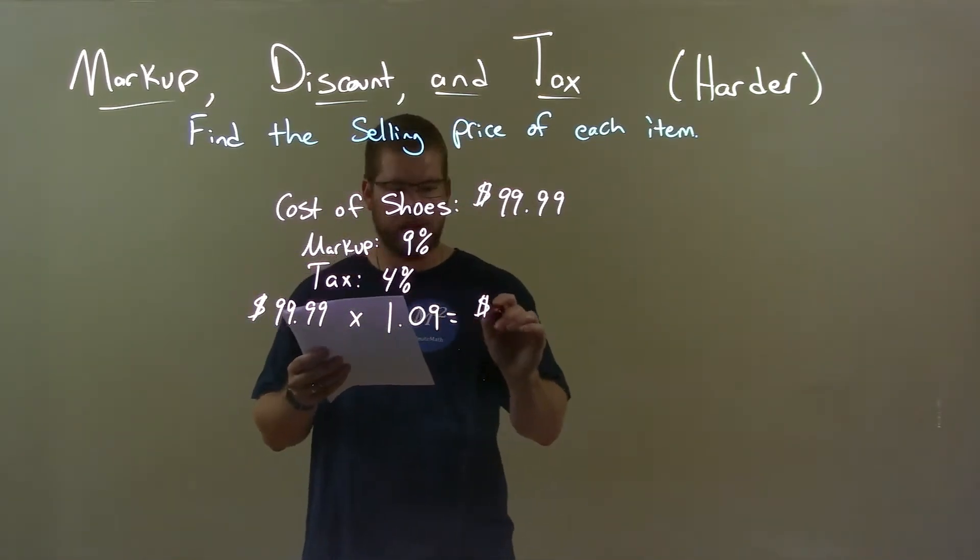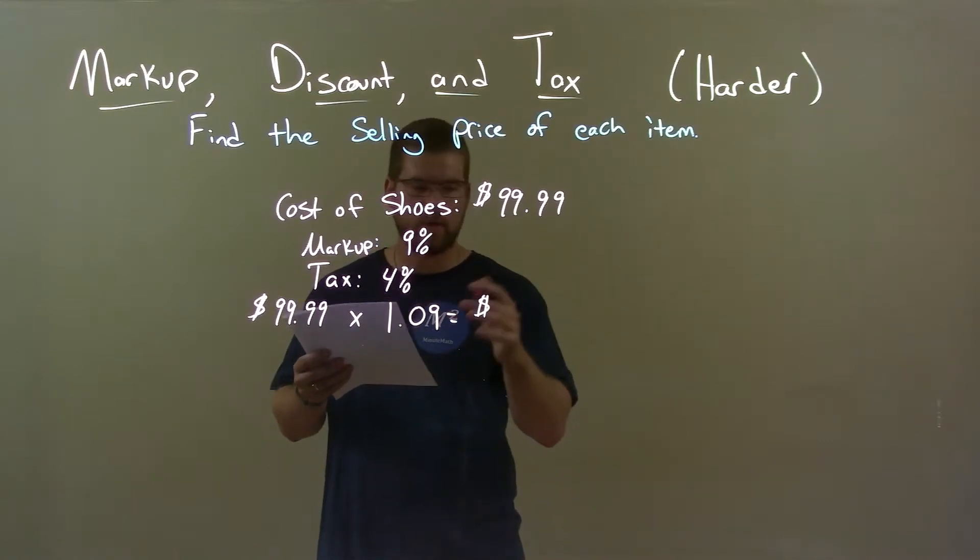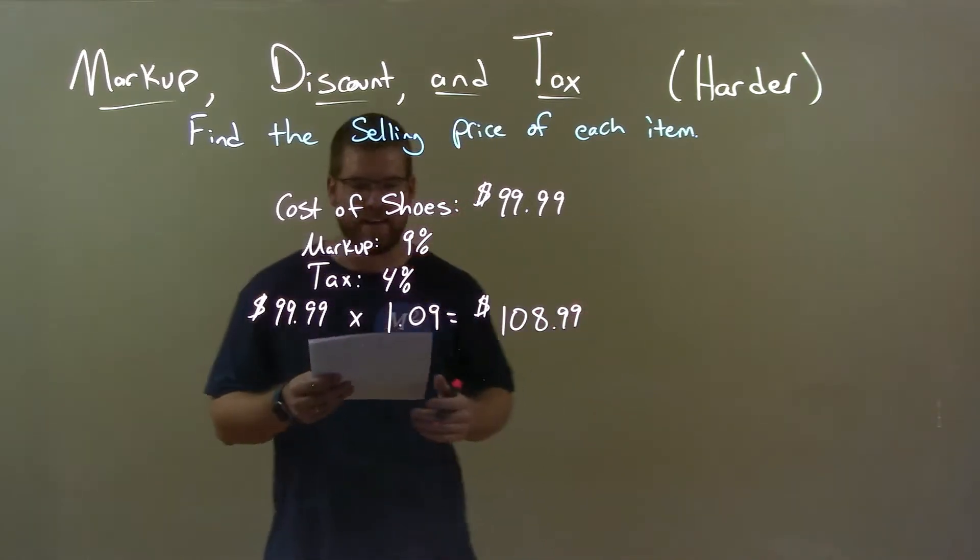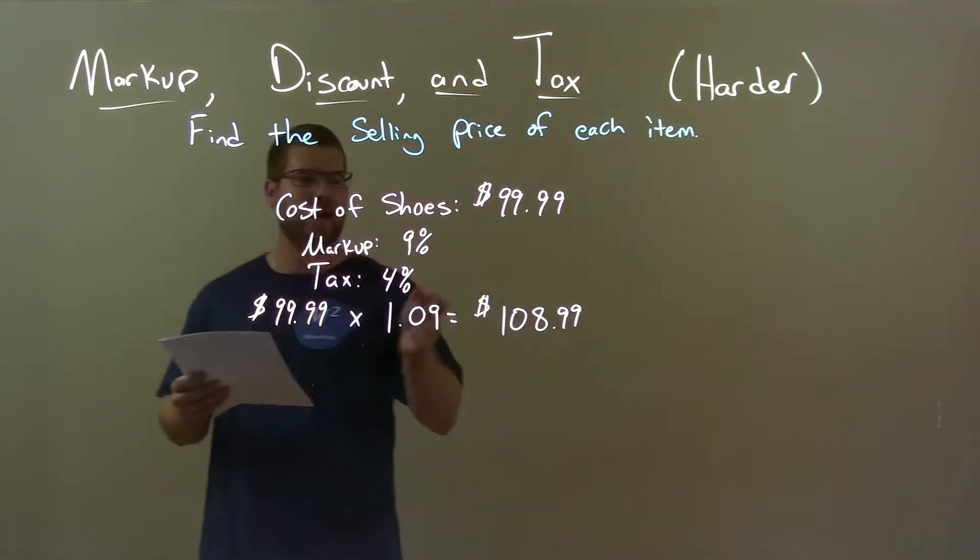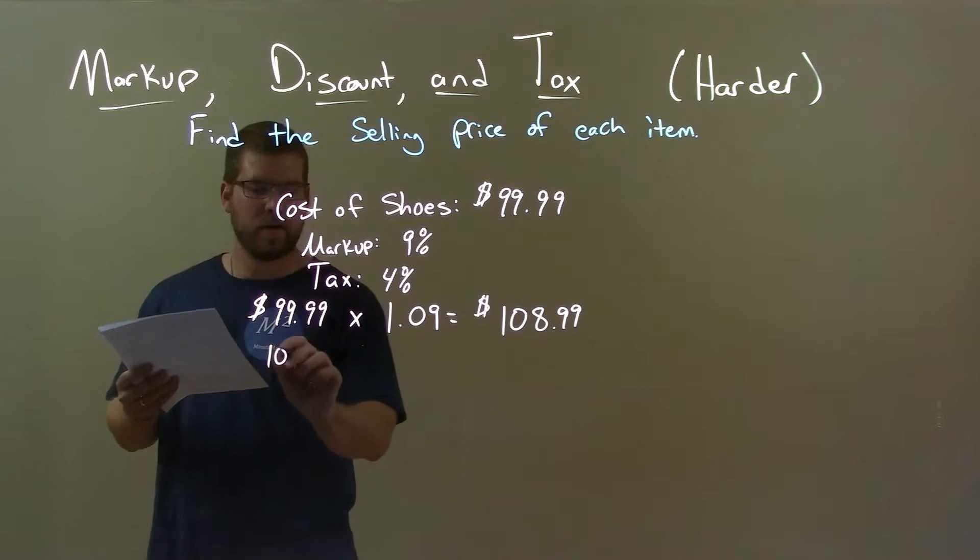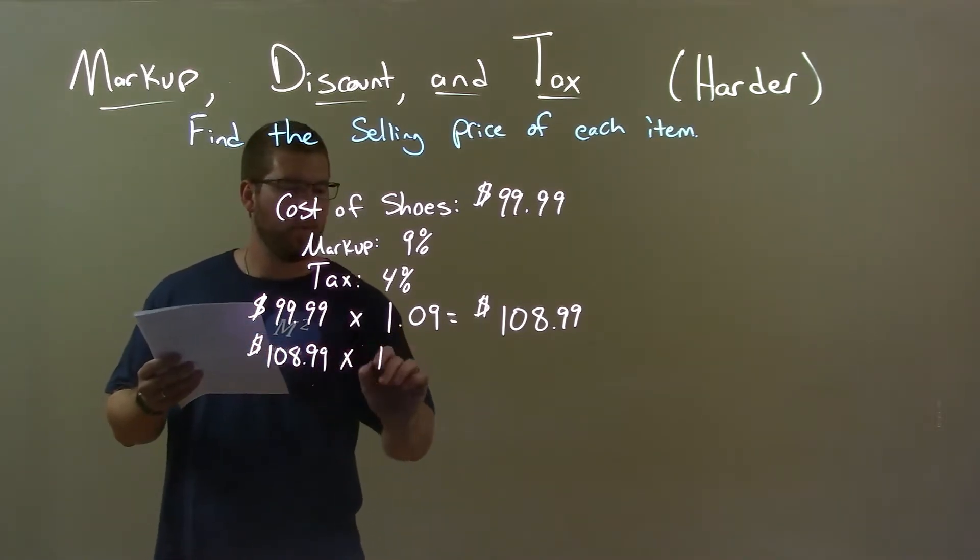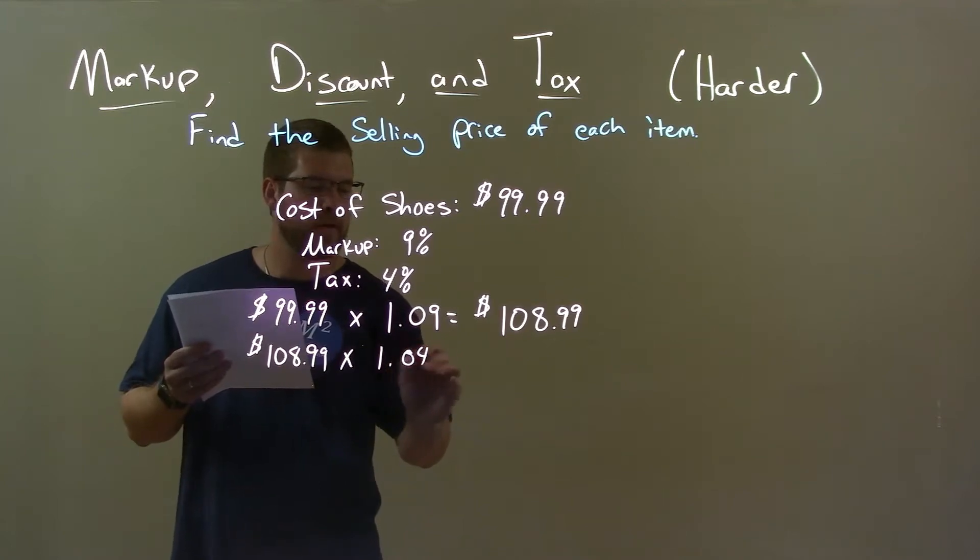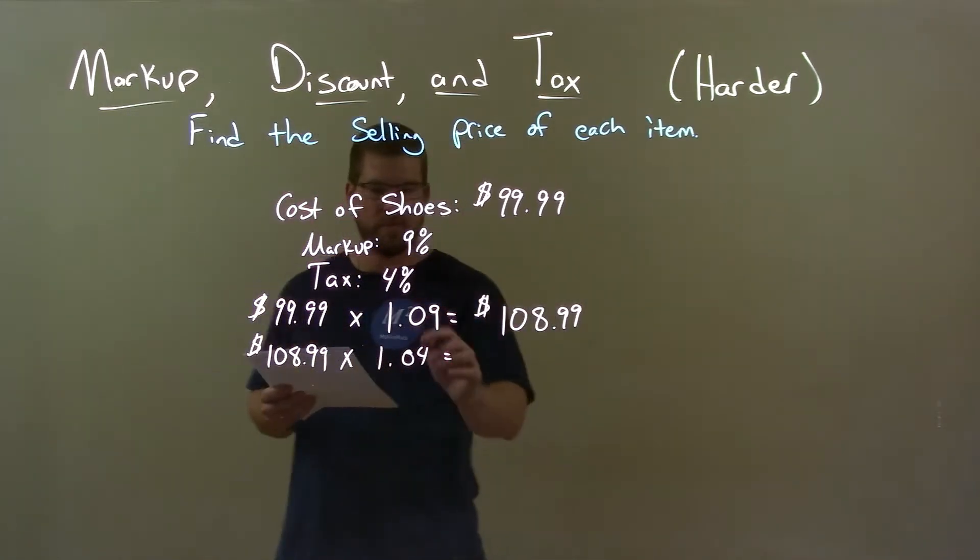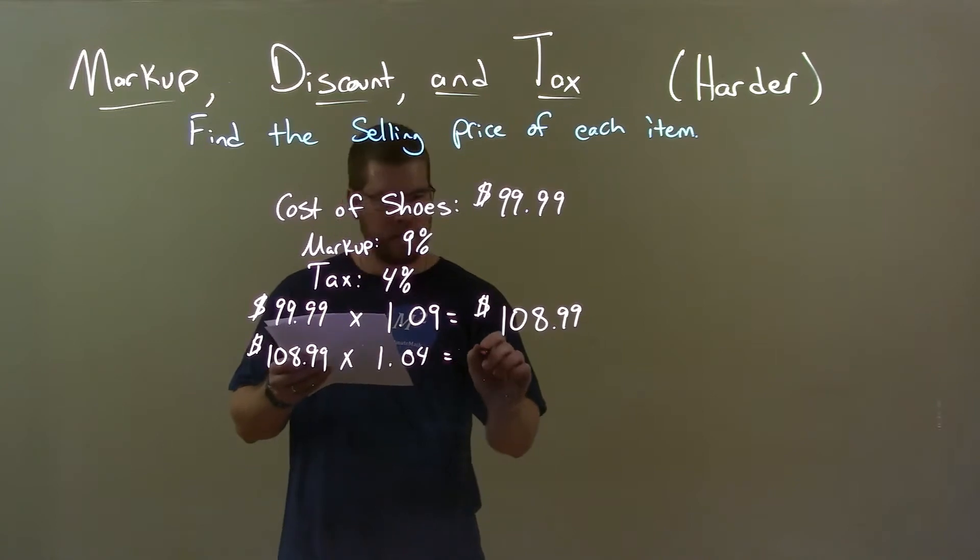From there, we have 4% tax. We take $108.99 and multiply it by 1.04, which represents the 4% tax. This gives us a final answer of $113.35.